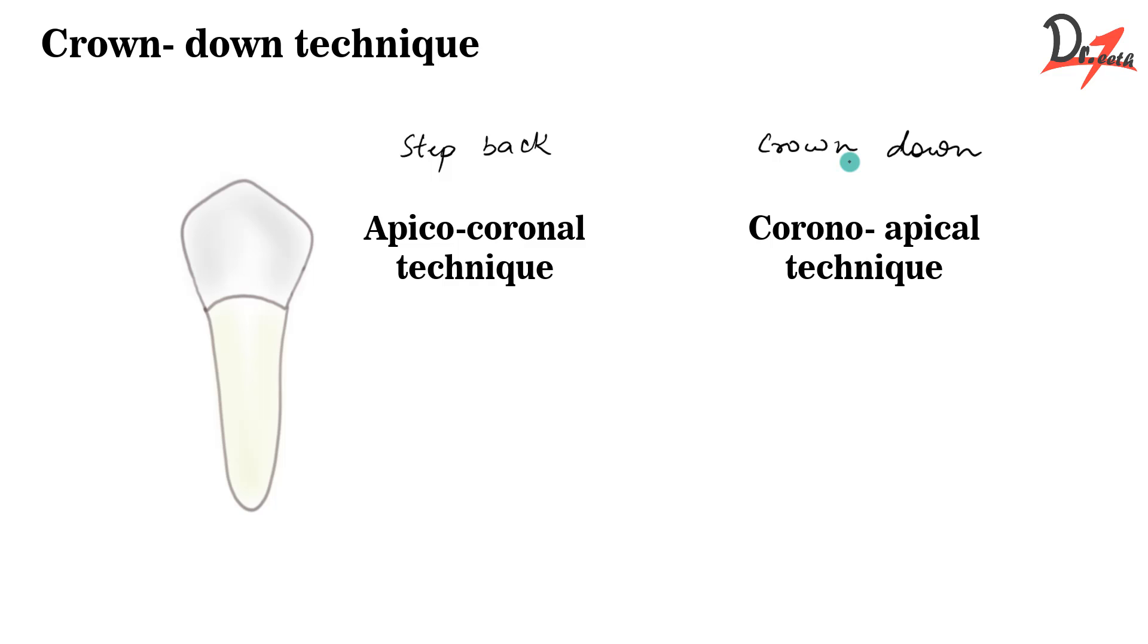So this will be the step back technique and this will be the crown down. The step back technique is an apico-coronal technique, meaning we first prepare the apical portion and then the coronal portion. While the crown down technique is a corono-apical technique, meaning we prepare the coronal portion first and then the apical portion. The step back technique starts with smaller instruments, but the crown down technique starts with the largest instrument.